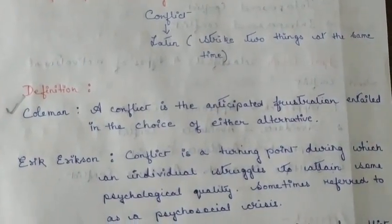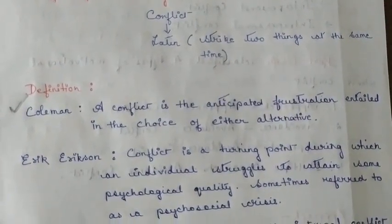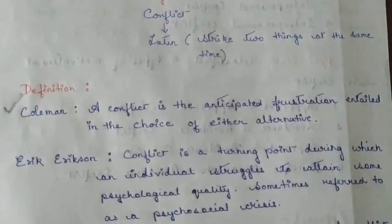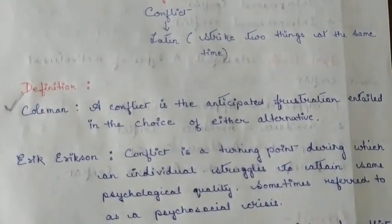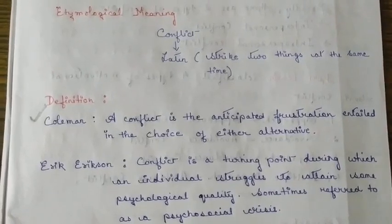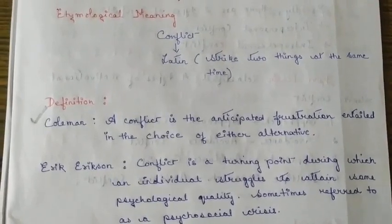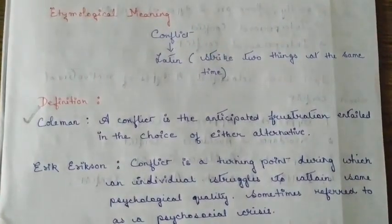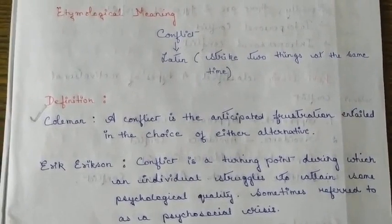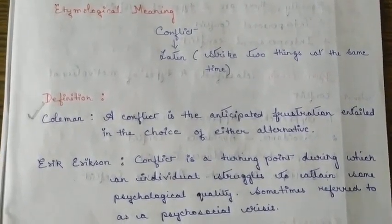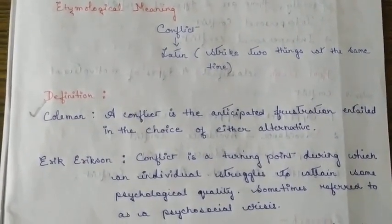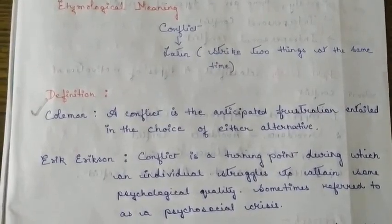Another definition is given by Coleman: conflict is the anticipated frustration entailed in the choice of either alternative. It is quite natural that conflict gives rise to frustration when you have to choose between two equally undesirable goals.